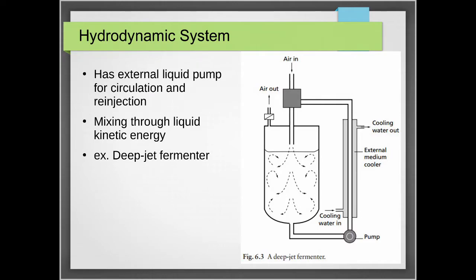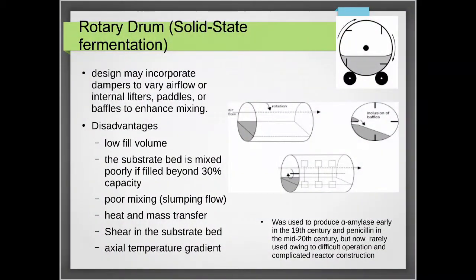Next is the hydrodynamic system. Instead of using compressed air, mixing is induced using fluid flow — an external liquid pump that circulates fluid inside the reactor, facilitating mixing through kinetic energy. An example is the deep jet fermenter, where a pump drives fluid flow and air is also introduced when the reactor contents are returned to the system.